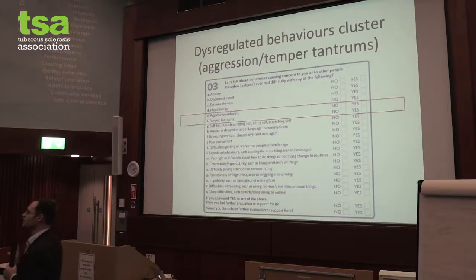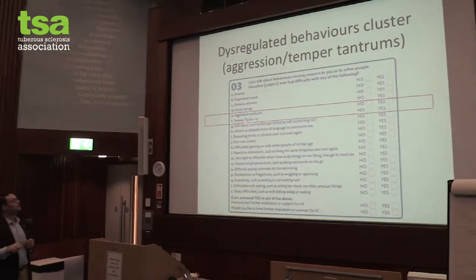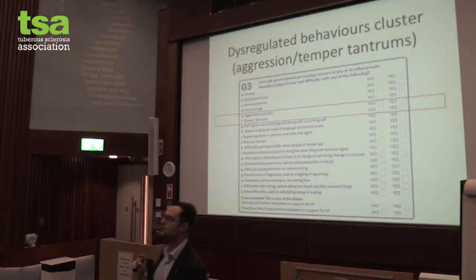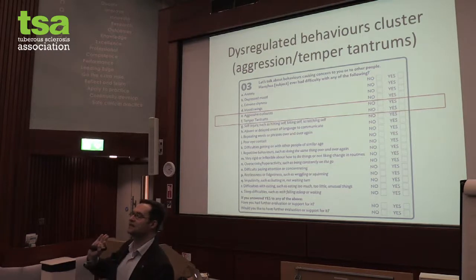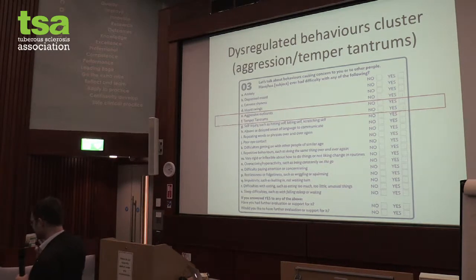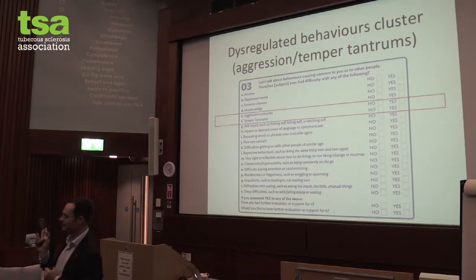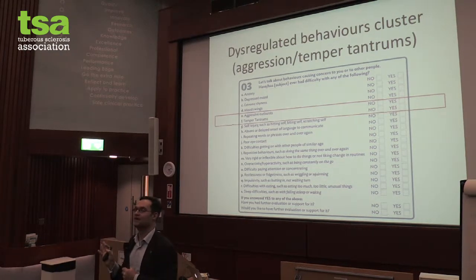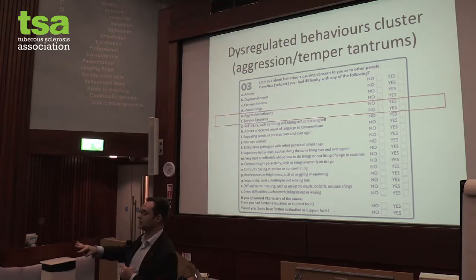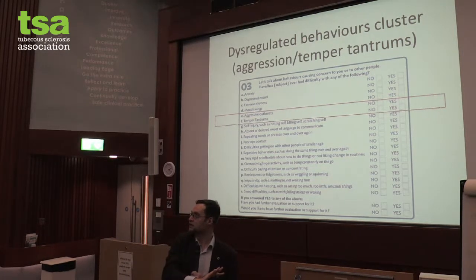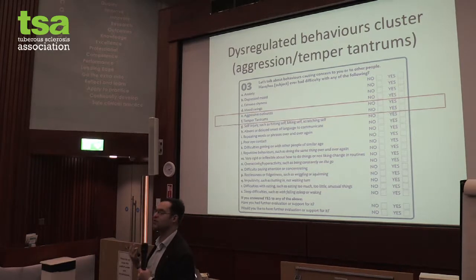Let's talk about the dysregulated behaviour cluster. The examples we give are aggressive outbursts and temper tantrums — the term 'meltdowns' is used in the autism community. If you have a child who has tantrums, aggressive outbursts, or meltdowns — who becomes dysregulated and starts to hurt themselves or others, or shout, scream, kick, or break things — we're worried. Interestingly, the rates of aggression are similar whether you have an IQ of 150 or in the intellectually disabled range.